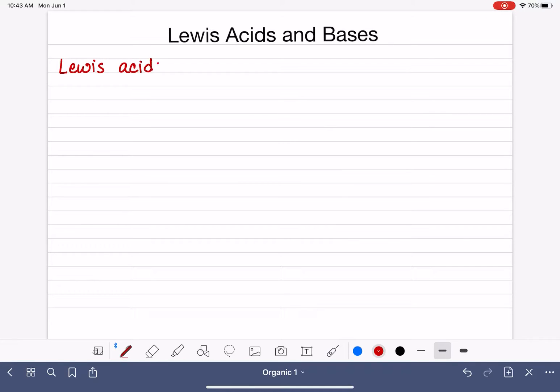In the Lewis method, a Lewis acid is defined as a molecule that accepts a pair of electrons. So we're going to write a Lewis acid is an electron pair acceptor.